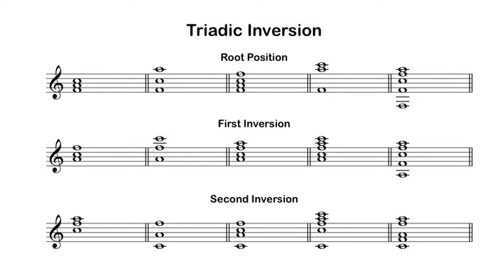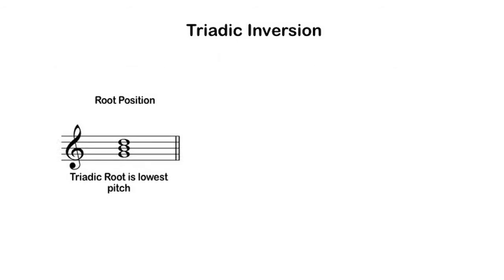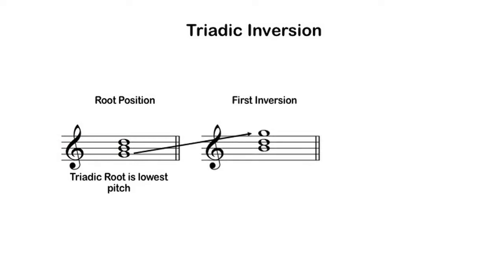The genesis of these labels is what causes the confusion regarding the use of the term inversion. In its most compact form, a root position triad has all three pitches either on lines or spaces. If we perform the act of inversion once, the root moves up, leaving the third as the lowest pitch.